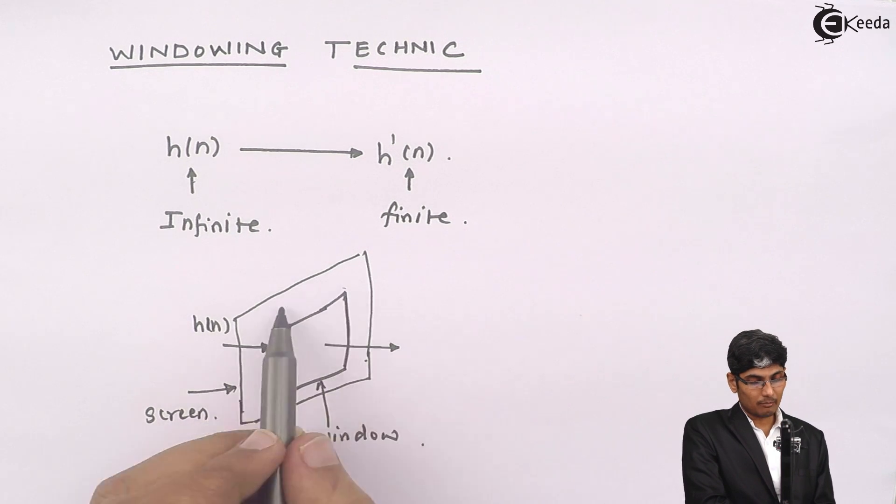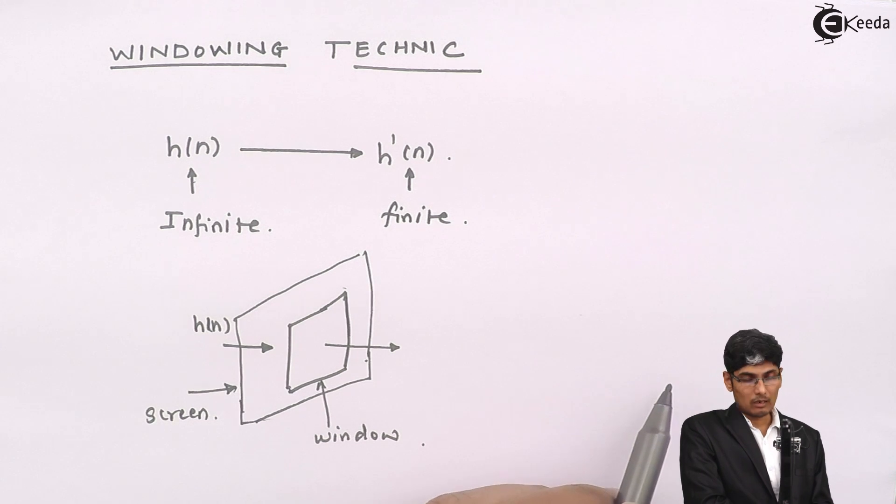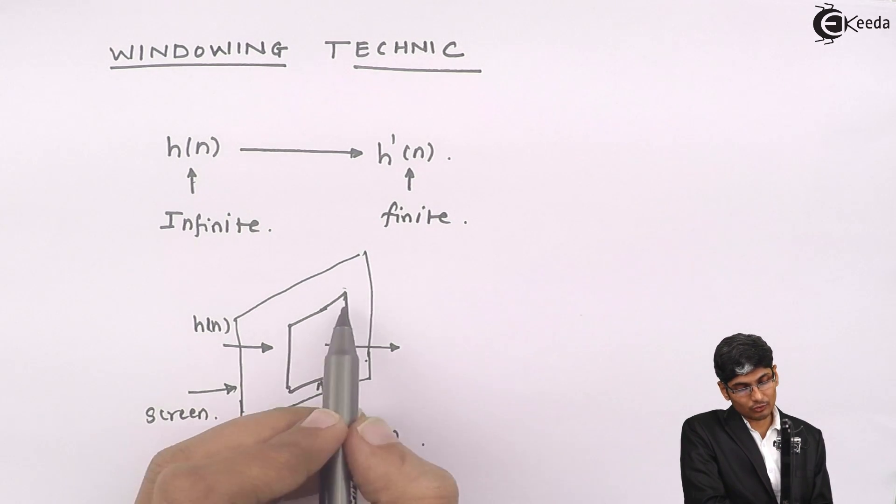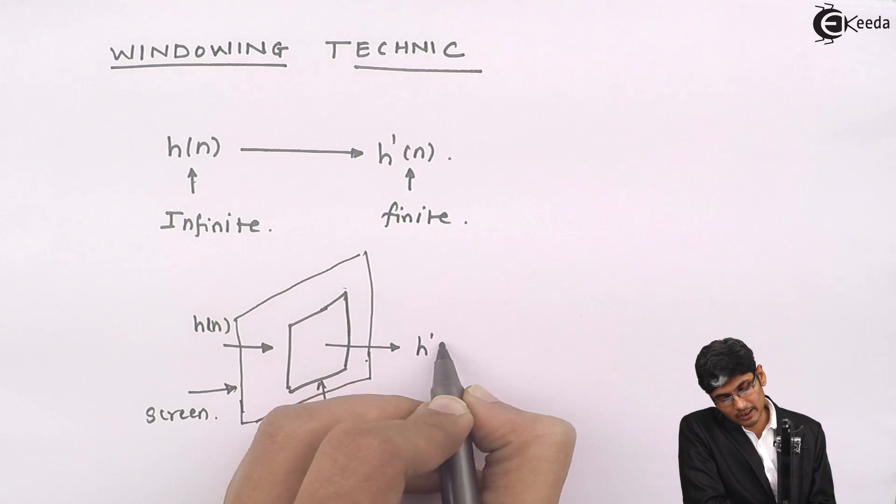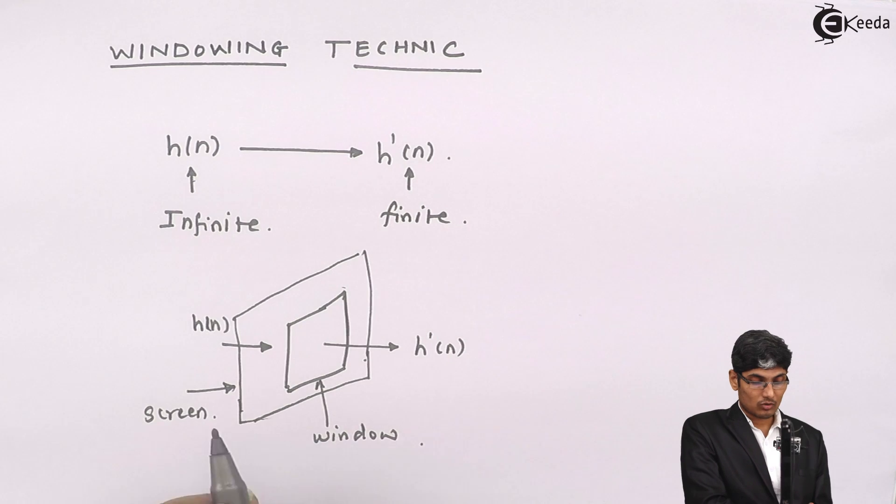When I pass my h of n, the samples which are coming on this screen will not all be allowed to pass through, but only the ones which pass through this window will be allowed to come out. Here I am going to get h dash of n.